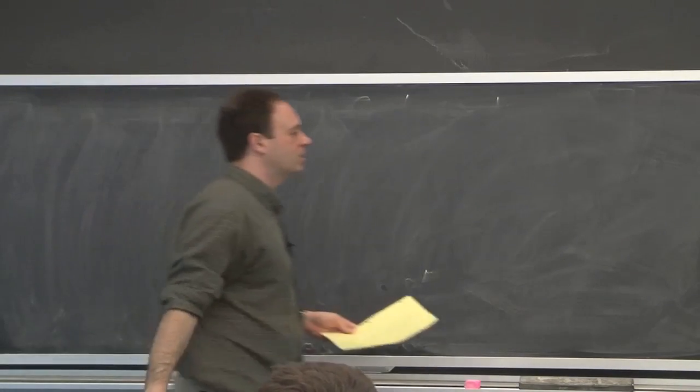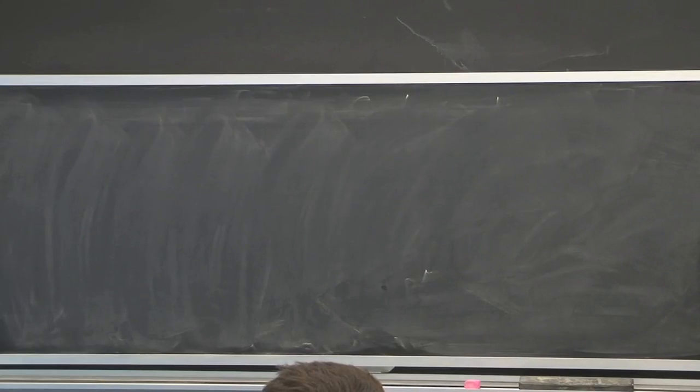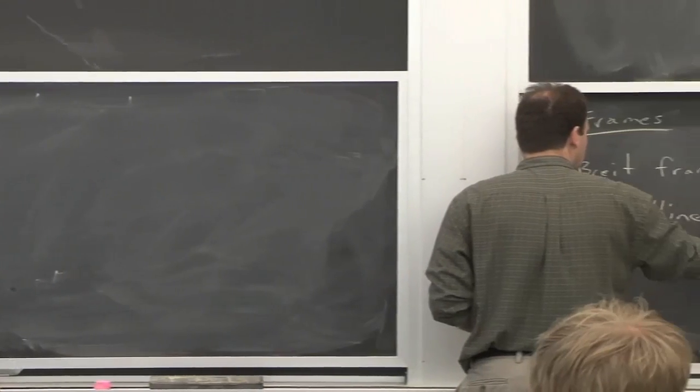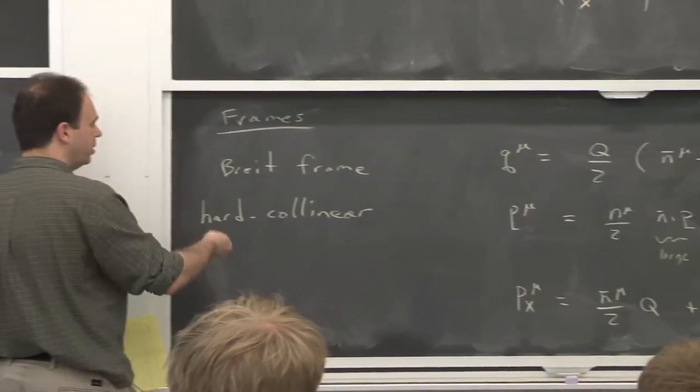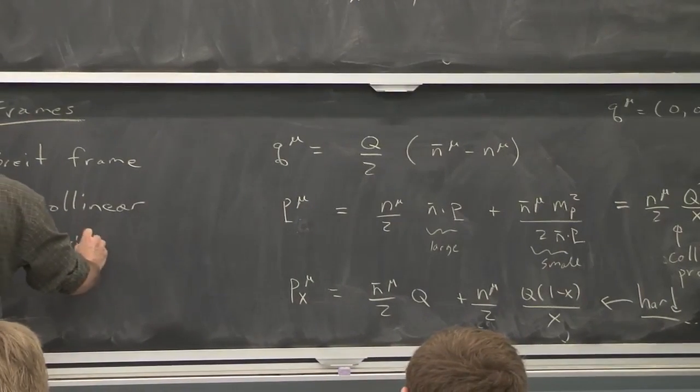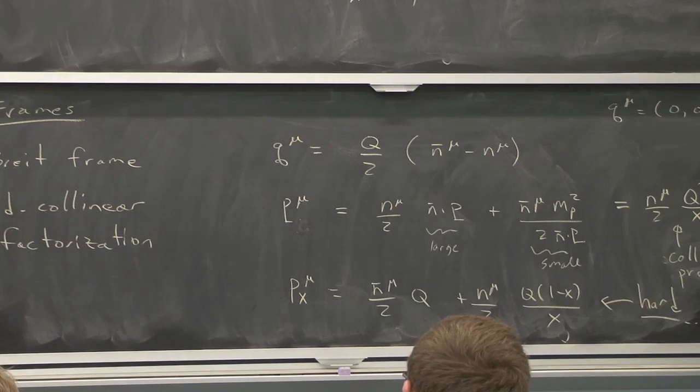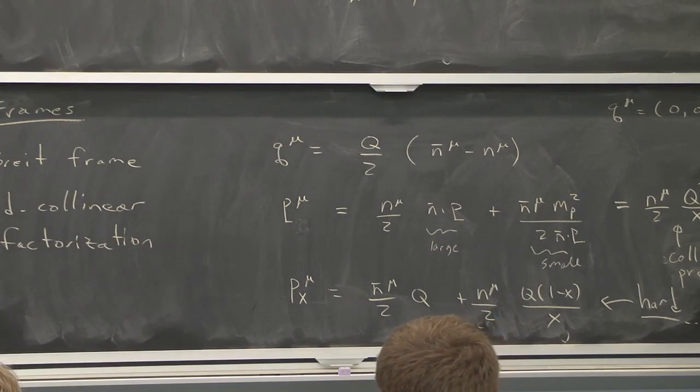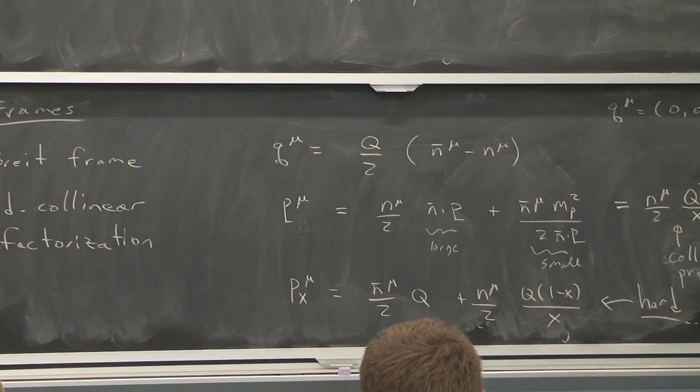So we're really talking about hard collinear factorization in some sense. Collinear describes the low energy degree of freedom, which is the proton. And hard describes the off-shell final state and the hard fluctuations. And really, what we want to do in DIS in this classic case is just separate hard and collinear fluctuations, at least in this frame. So we can do that for the cross-section.